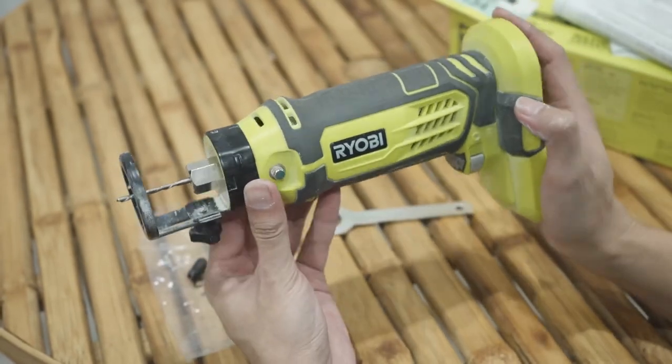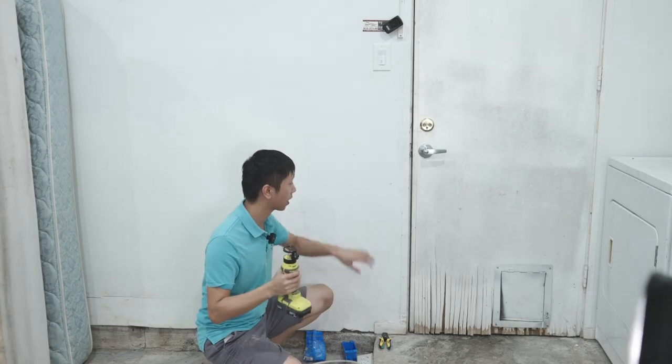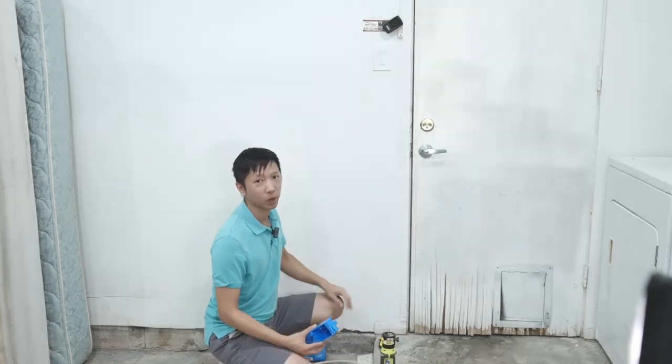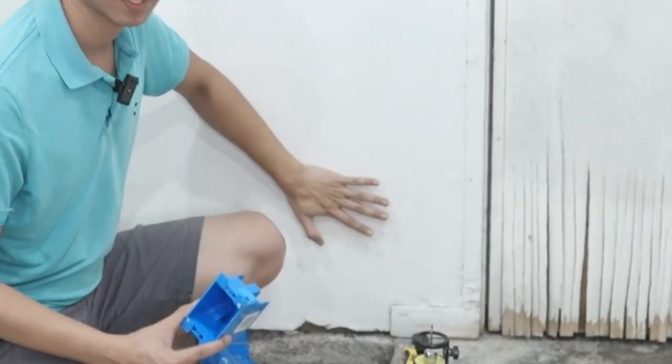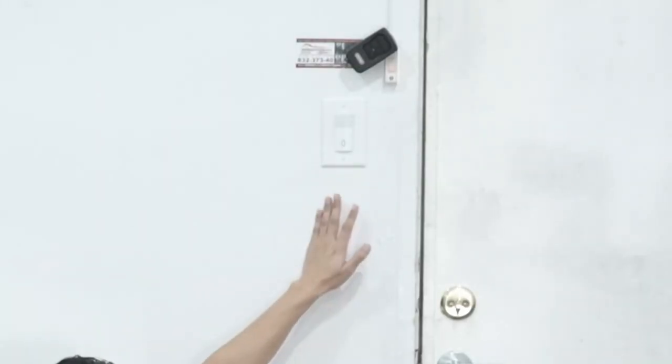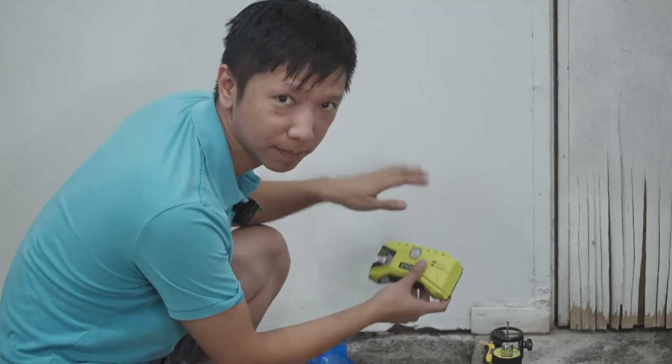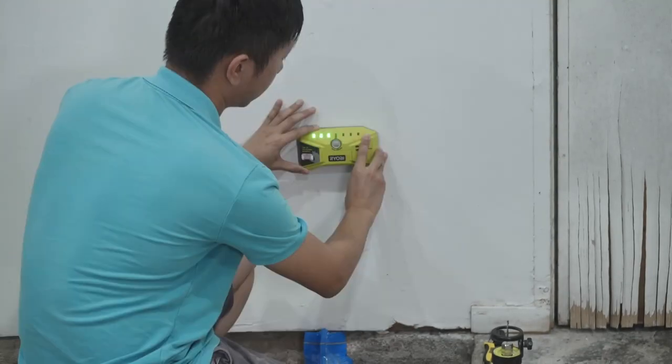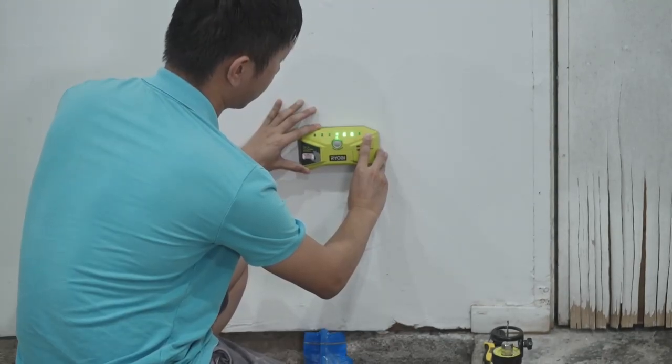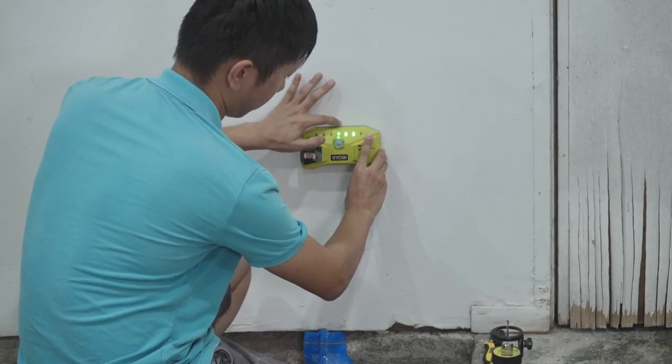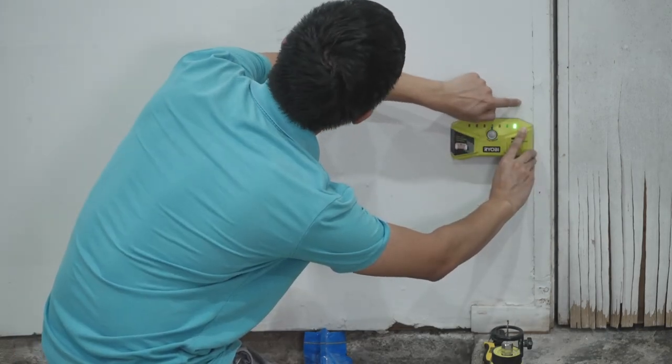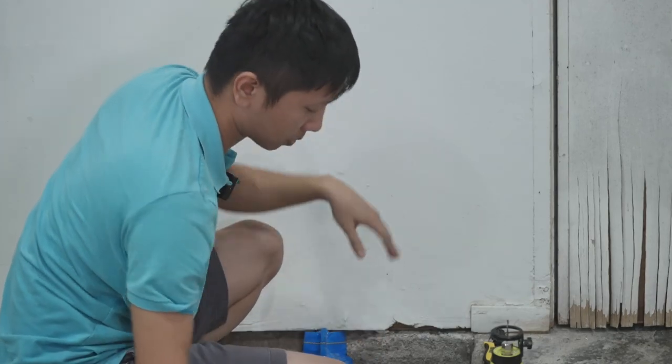To demonstrate how this tool works, we're going to add an outlet right here and draw the power from this switch. First we're going to find the stud behind this drywall. The stud finder is telling me the stud is right in the middle here and around here.